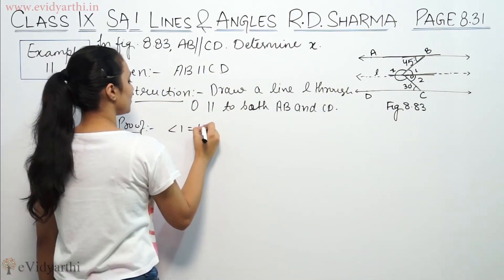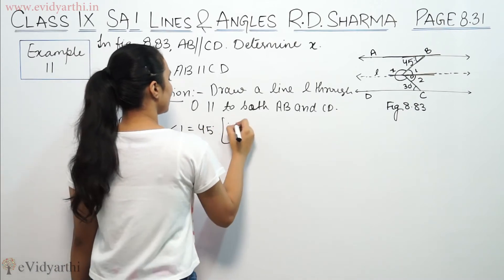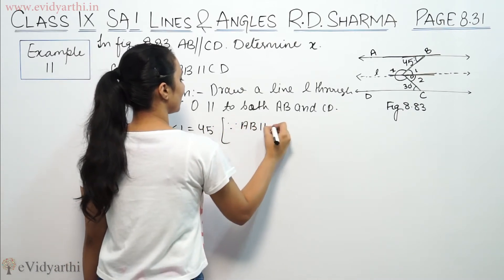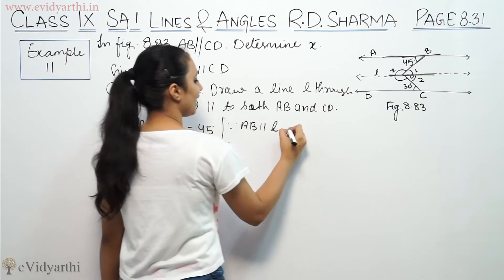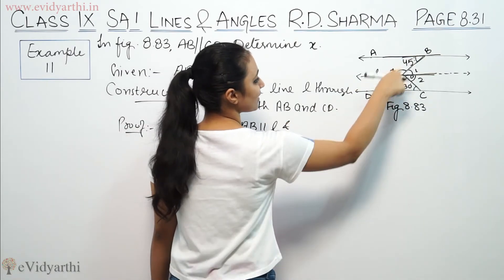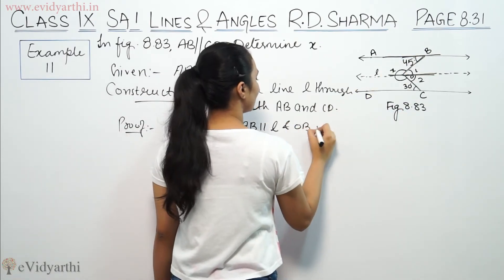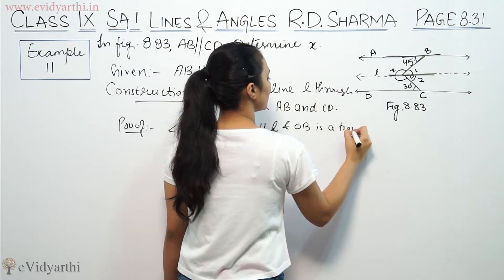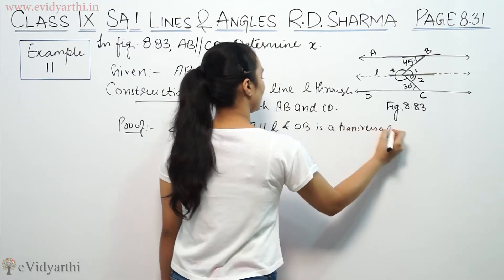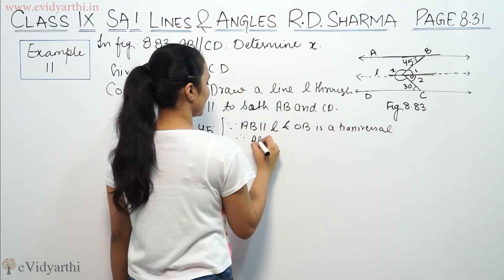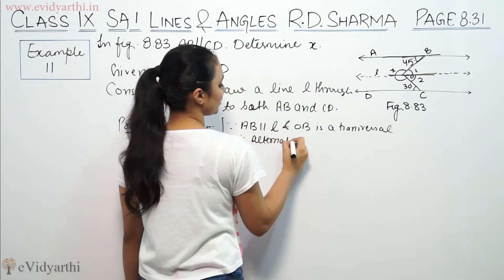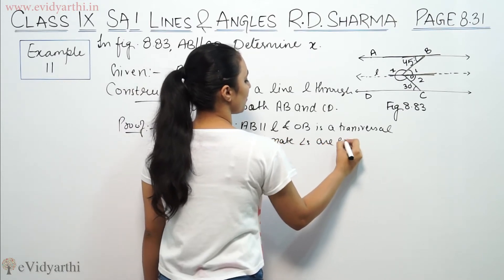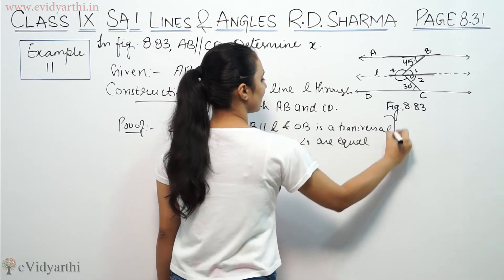So we write angle 1 equals 45 degrees, since AB is parallel to L, and OB is a transversal. Therefore alternate angles are equal. Because they form a Z, they are alternate angles, so alternate angles are equal.